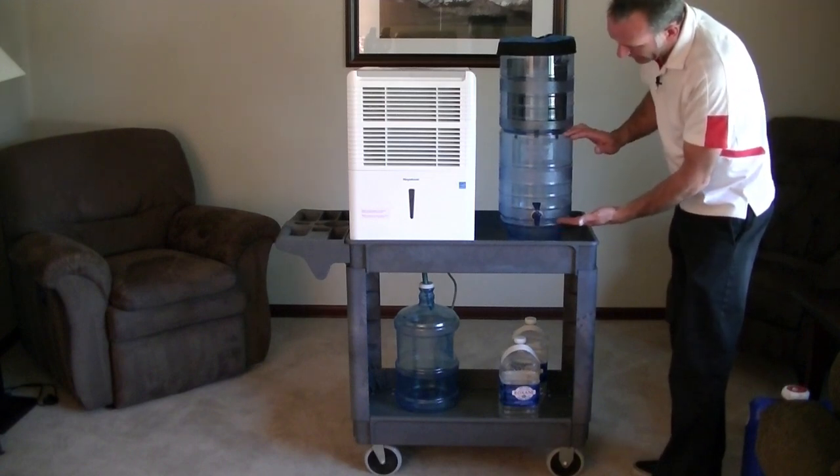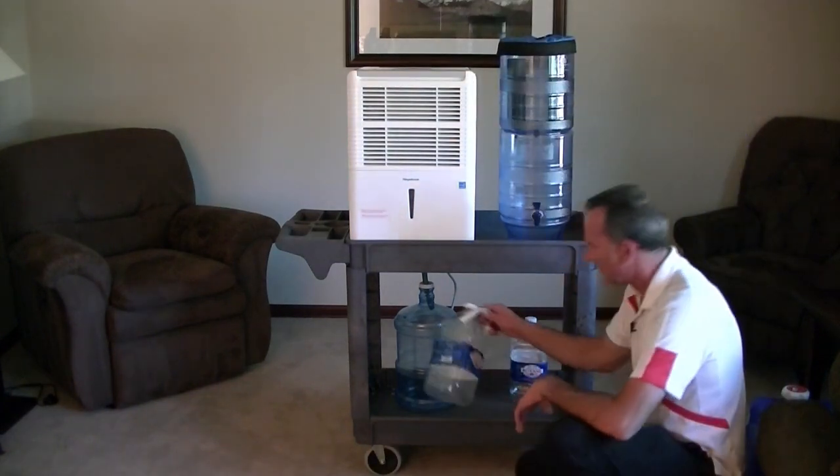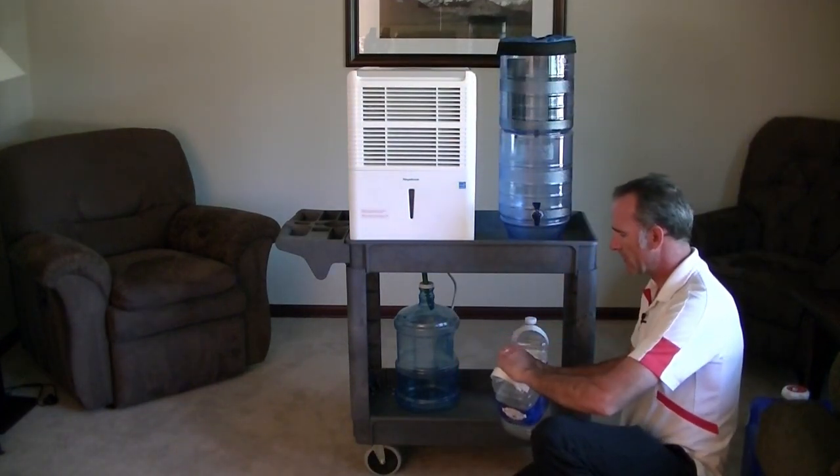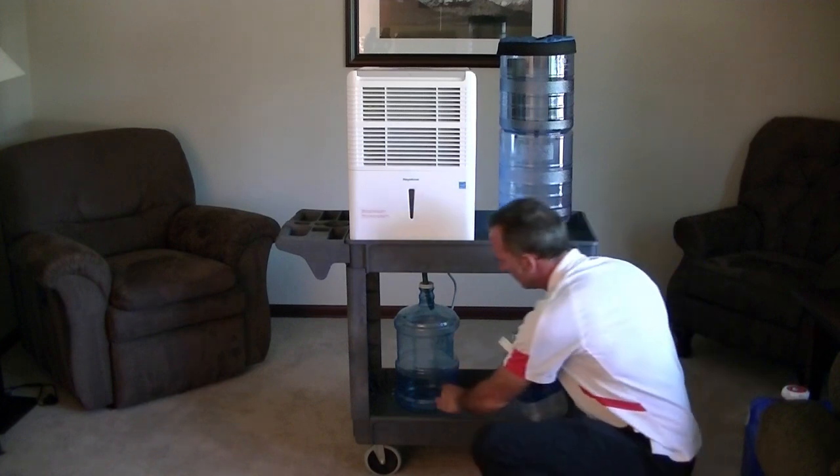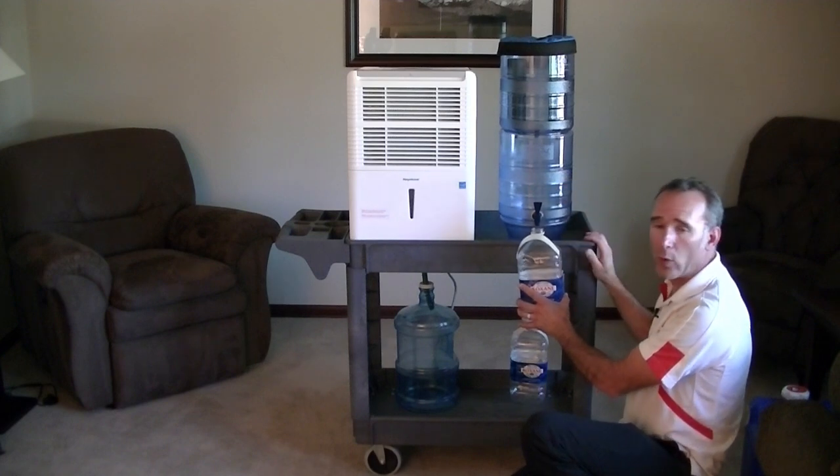So then this Berkey light holds two and a half gallons. So after that's full, then we'll take our recycled water jugs that we're using. They're also BPA-free. And just fill them up one gallon at a time.